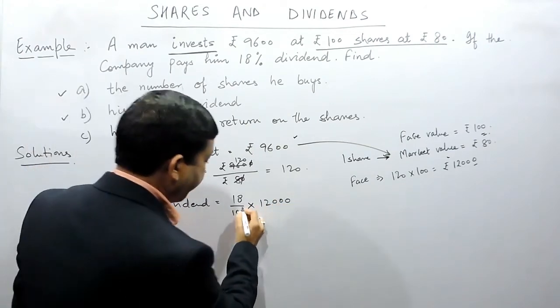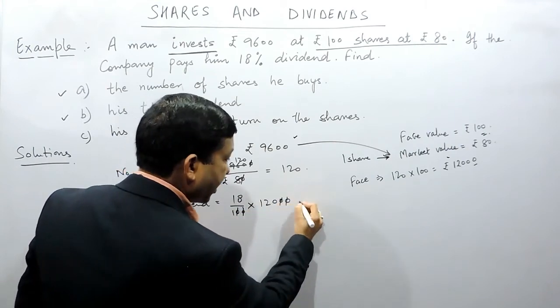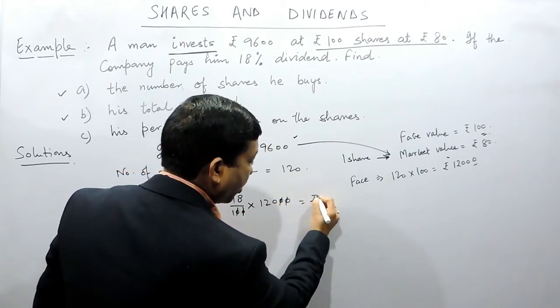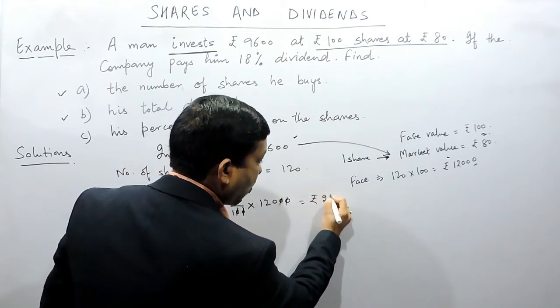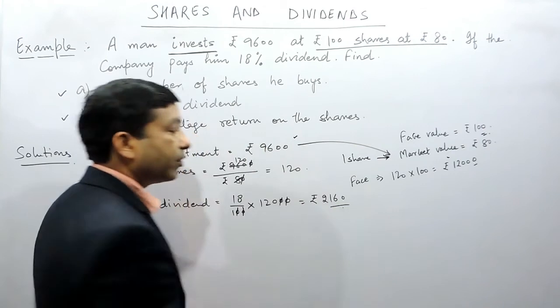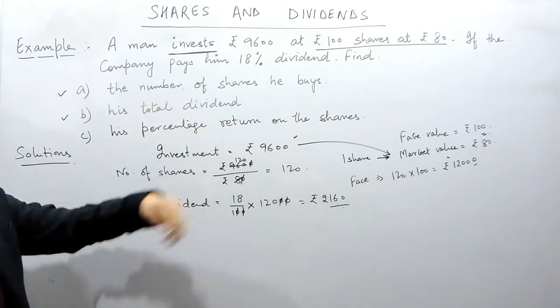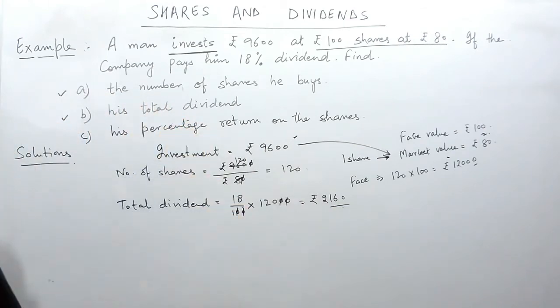So the total dividend amount is equal to 18% of rupees 12,000 — the face value. When we calculate this, it comes out to be rupees 2,160. So the total dividend anyone receives is rupees 2,160.